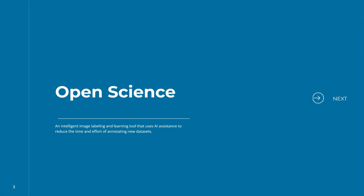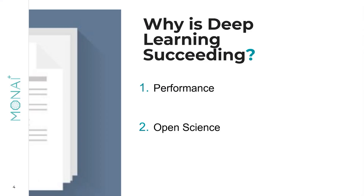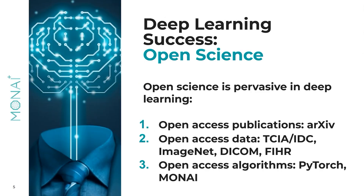Open science is really important for making sure that we have things like reproducibility, and is really important for why deep learning is succeeding — with performance and open science being two key reasons. Some key pieces of this include arXiv, TCIA, IDC, DICOM, FHIR, and different open access data types and areas where you can get data.